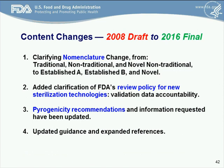This slide summarizes all the content changes from 2008 to 2016. This includes a nomenclature change — the previous version included traditional, nontraditional, and novel nontraditional methods; now we're looking at established A, established B, and novel methods. Added clarification is provided of FDA's review policy for new sterilization technologies and validation data accountability — the key message. We want to know whether the validation data is sufficient because it conforms with existing standards or because we've already reviewed it, or we need to see new validation data for the first time. Pyrogenicity recommendations and information requested have been updated, and updated guidance and expanded references have been provided throughout.